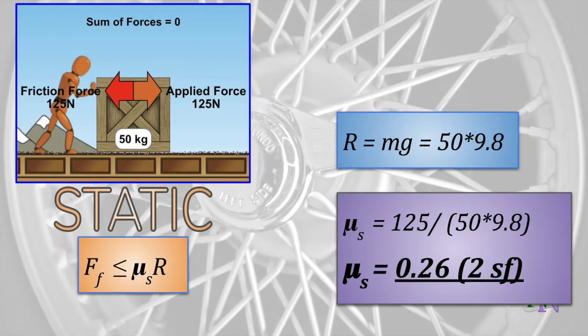Here is how we calculate the coefficient of static friction when the object is at the point just before it moves. The frictional force is at its maximum of 125 Newtons just before the box slides and the friction becomes dynamic. The reaction is equal to the size of the weight of the box and is calculated using M times G. Here we use G is 9.8 Newtons per kilogram since the other values are at least two significant figures.